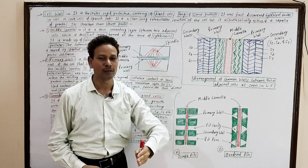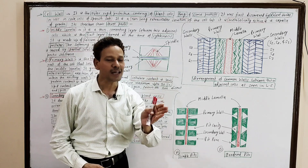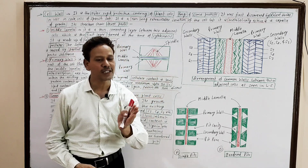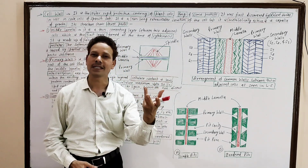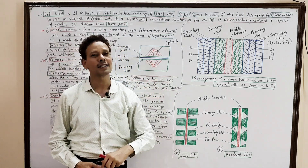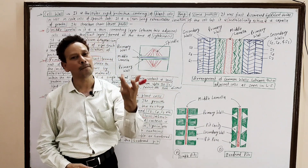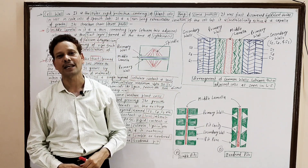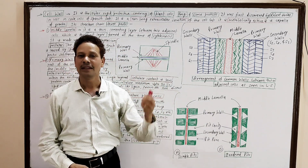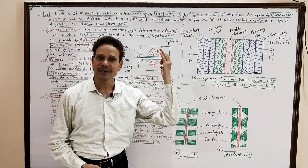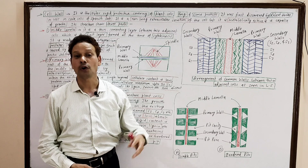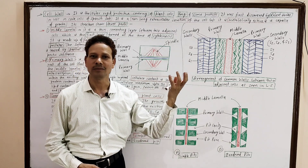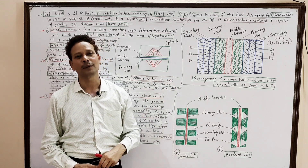Cell wall — it is the outer rigid covering of plant cells, fungal cells, and some protist cells. Its discovery credit goes to Robert Hooke.